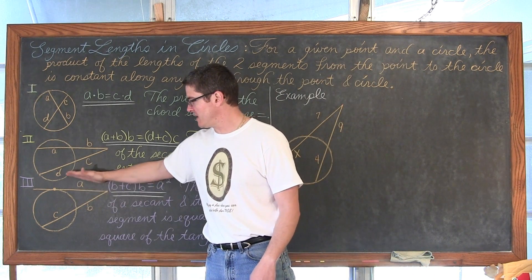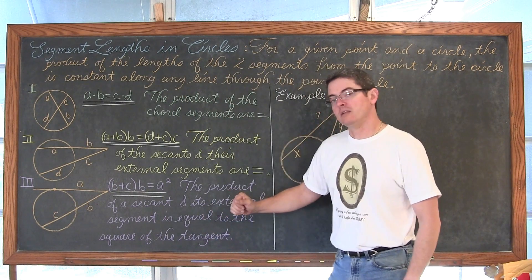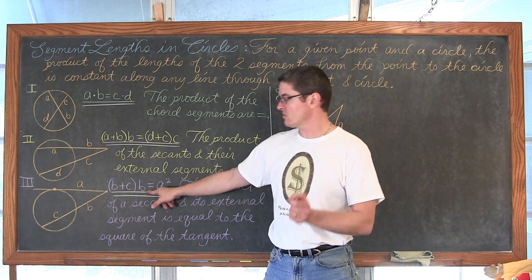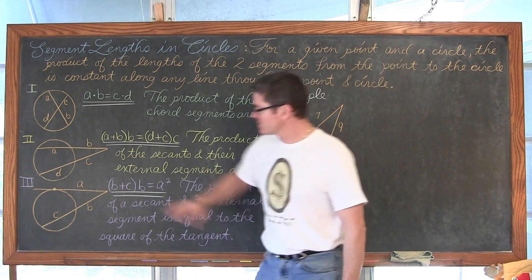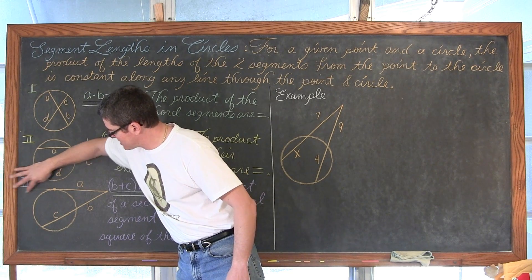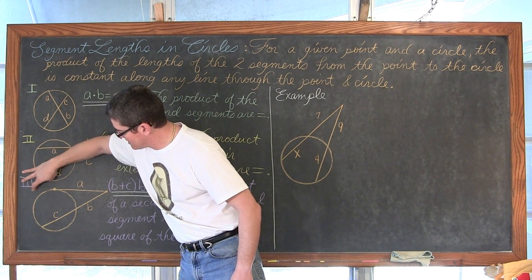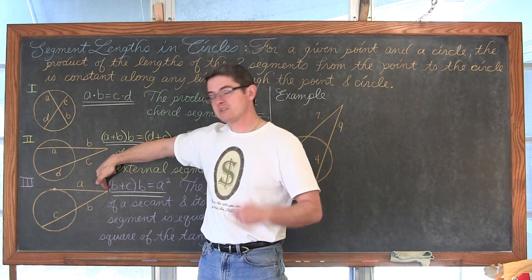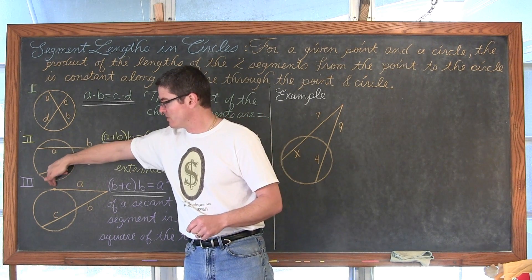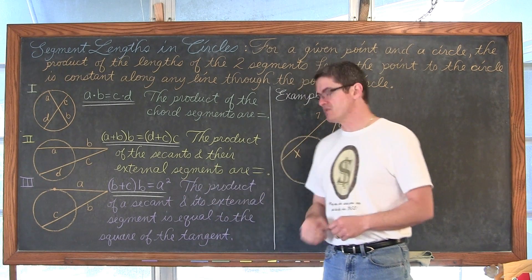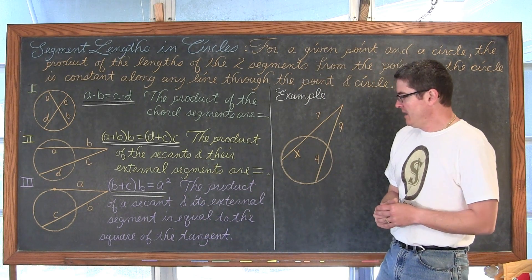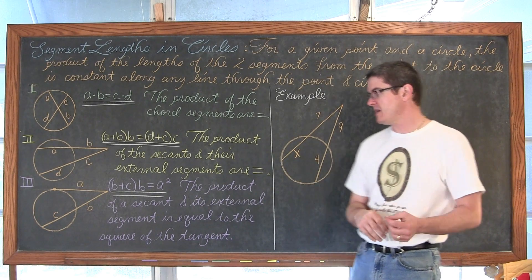Basically the same situation here with a tangent and a secant. The entire secant length is getting multiplied by just the external portion, is equal to A squared. I am identifying A as the distance from this intersection point outside the circle to the point of tangency. Or the product of a secant and its external segment is equal to the square of the tangent line.